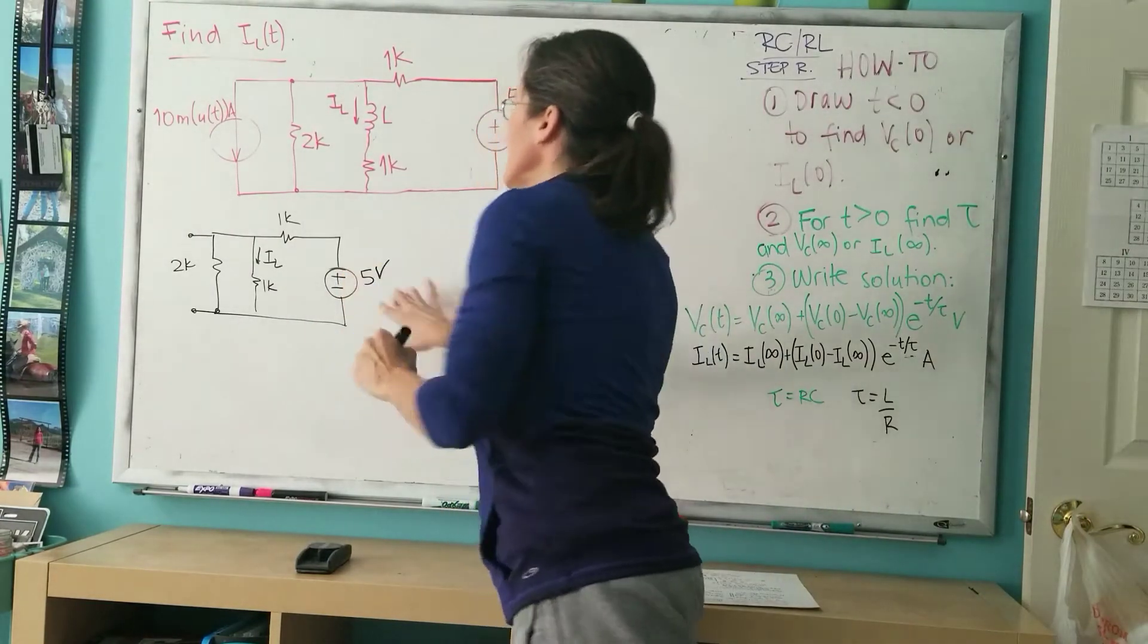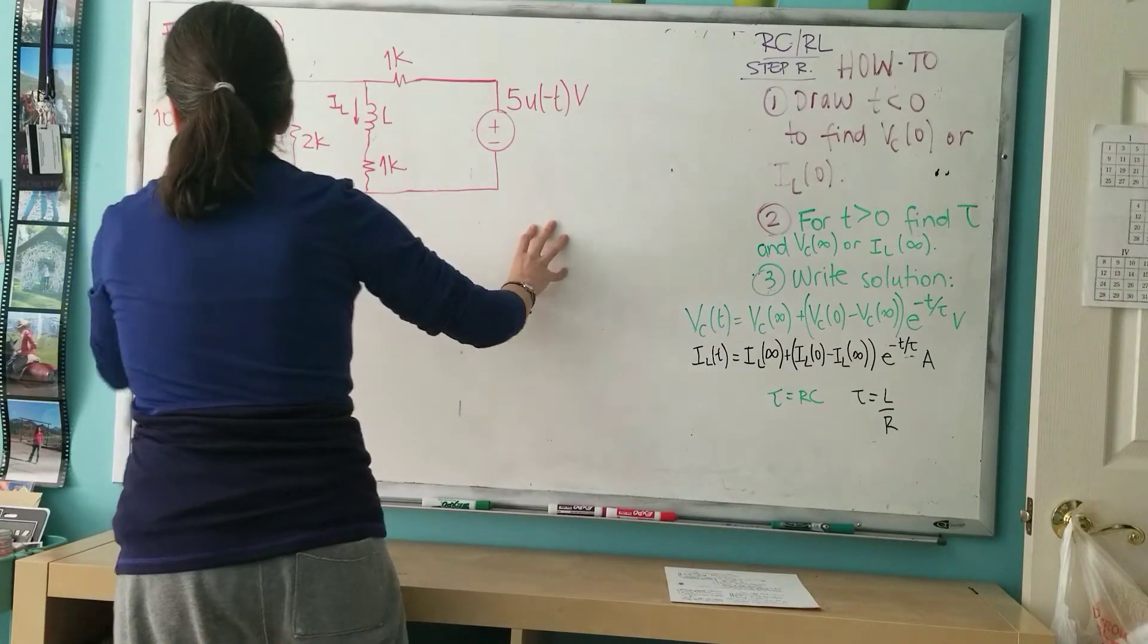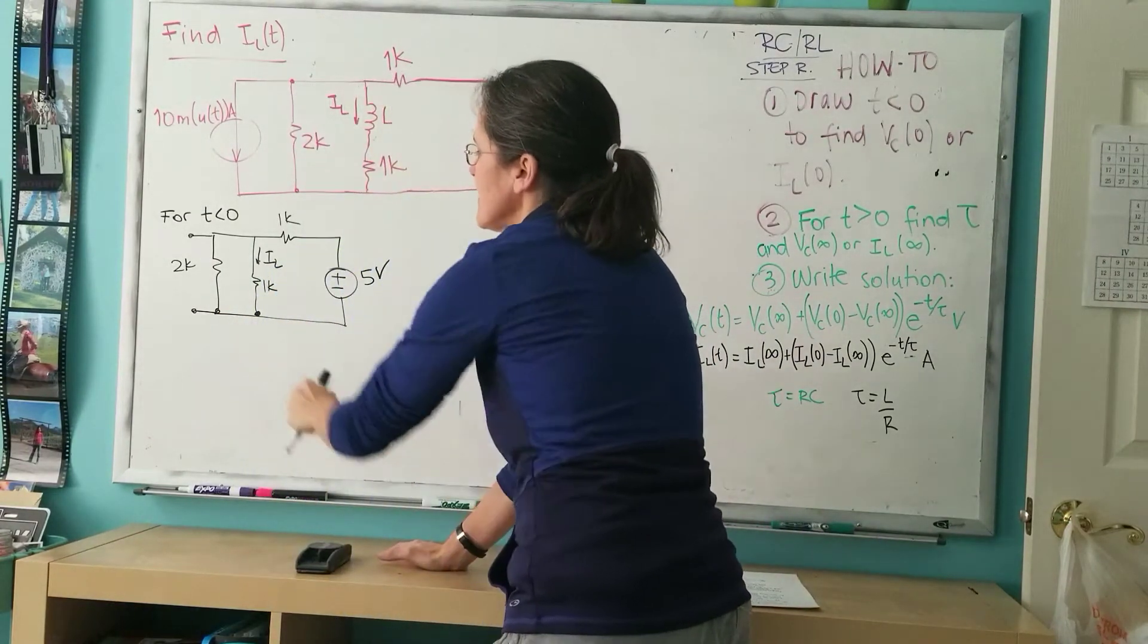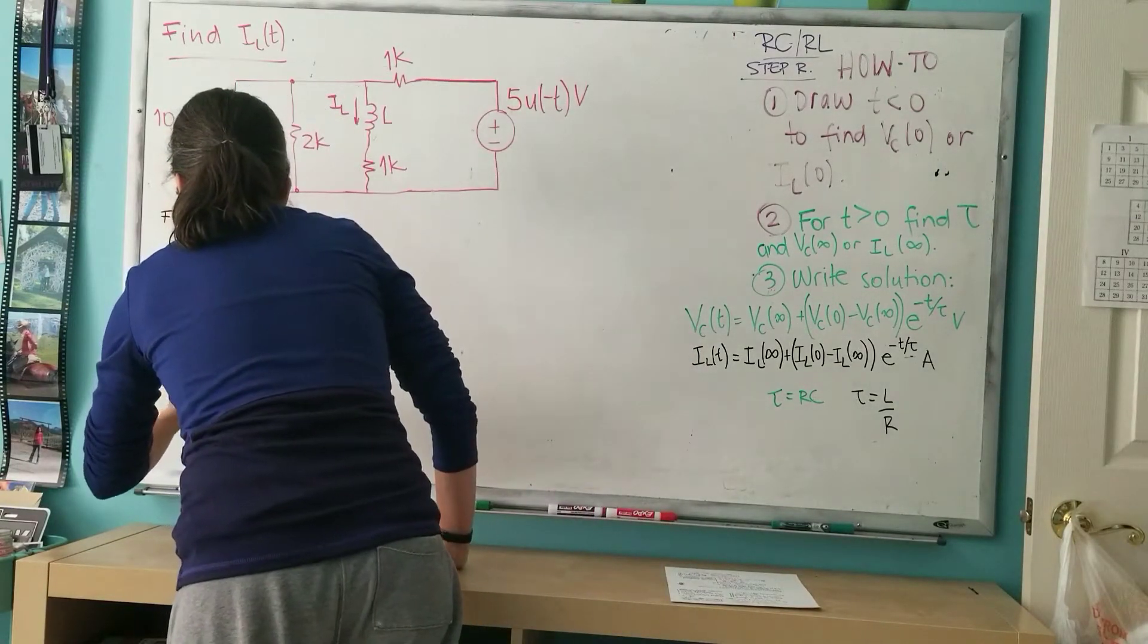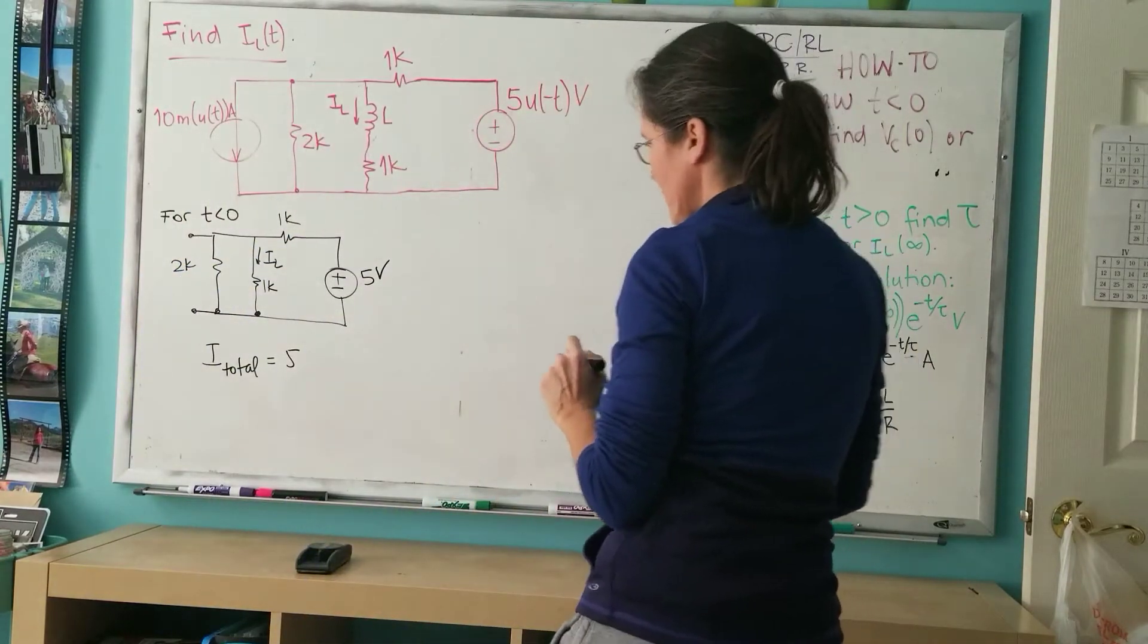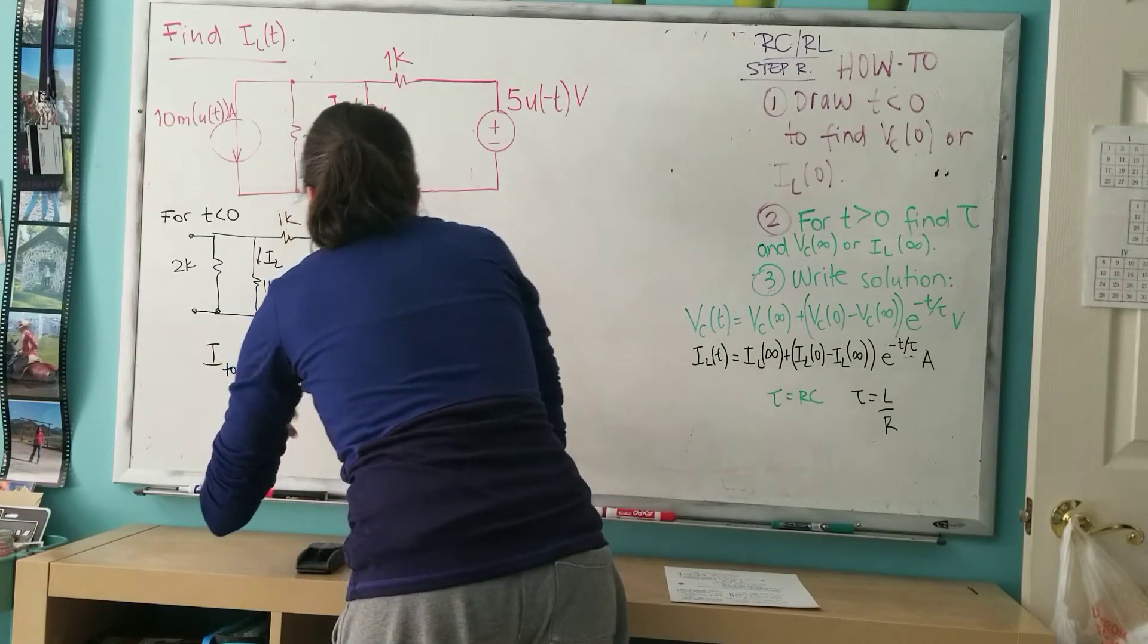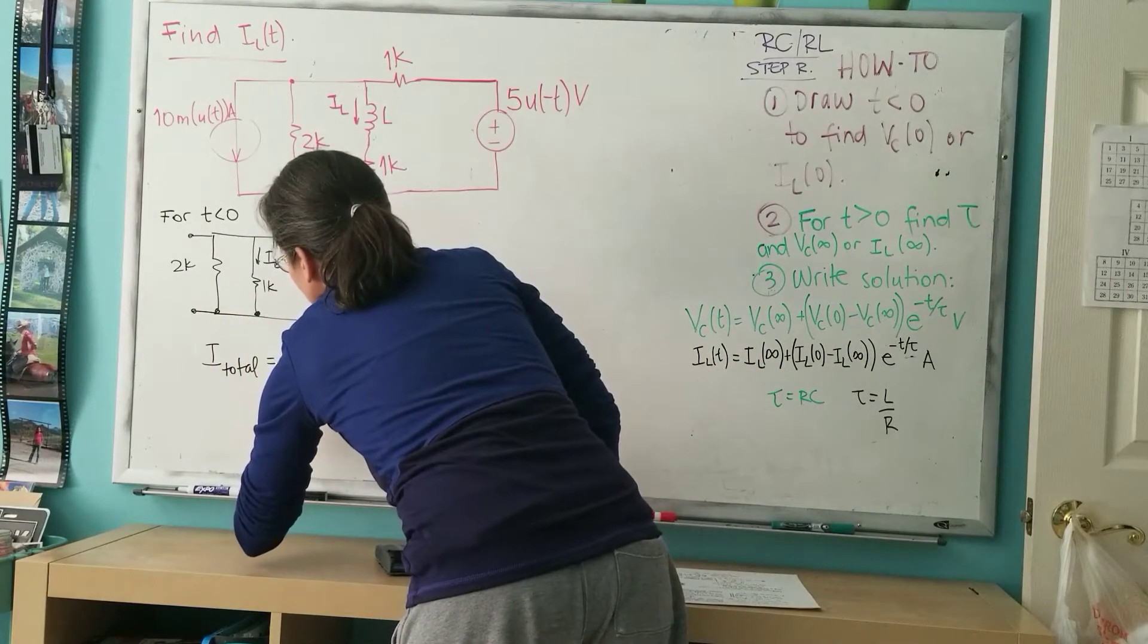The way to draw this is literally the five volts for t less than zero. I have two in parallel with one here. For the current, the total current through the circuit, I'm going to say that it's five divided by the equivalent resistance, which is 1k plus the equivalent between two and one, which is going to be two-thirds of a k.